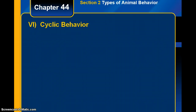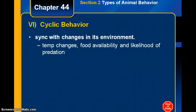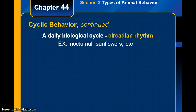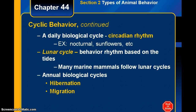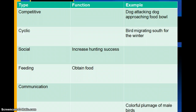The last type of behavior is cyclic behavior — in sync with changes in the environment, such as temperature changes, food availability, or likelihood of predation. These follow a pattern with the environment. A daily biological cycle is called a circadian rhythm, like nocturnal behavior or sunflowers following the sun. Some follow lunar cycles based on tides, while annual biological cycles include hibernation and migration, repeating every year.